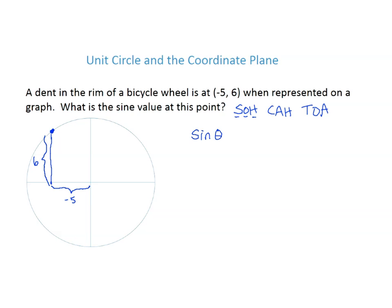Sine of our angle theta is equal to opposite over hypotenuse. Now we don't have an angle yet, but we're going to connect that point negative 5, 6 back to the origin — and this is the angle that we're looking at. Let me write the other leg of the triangle in. So I've got two legs: the length would be 5, and the other one is 6. I need to find the hypotenuse, because to write the sine I need the side opposite my angle theta and the hypotenuse.